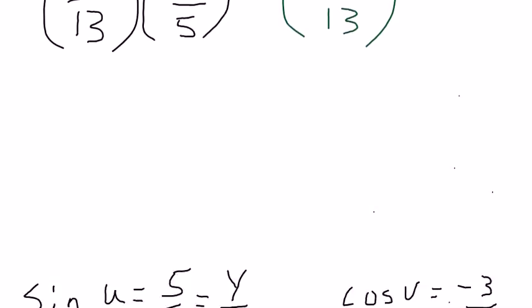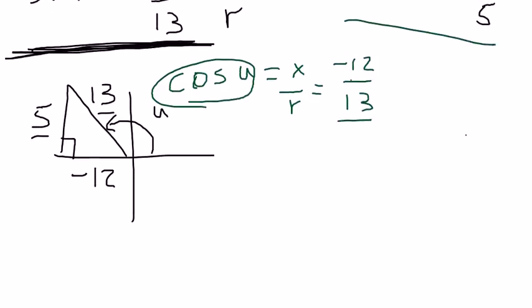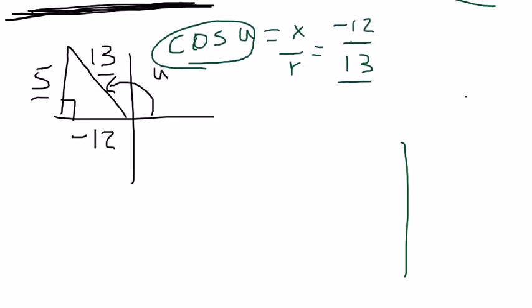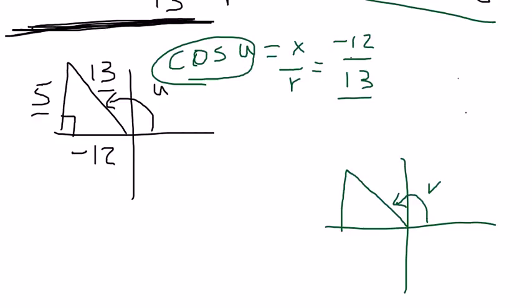And now let's find the sine of v. Same process. Sine of v, we're going to use this information from the cosine of v. Again, we know this is in the second quadrant because it says so in the directions. So cosine is x over r. For this triangle, I'm going to put my x value at negative 3, my r value at 5.